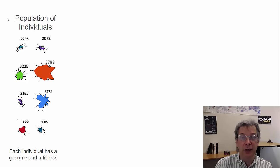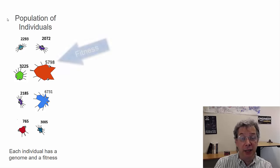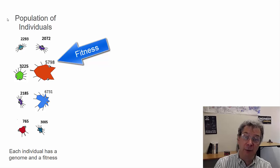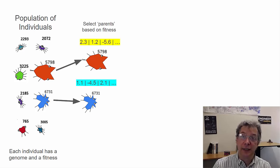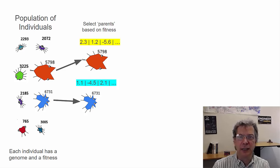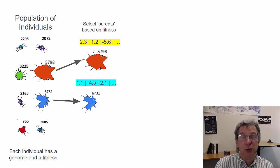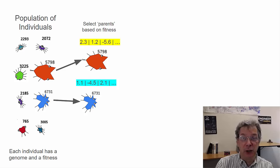Each individual has associated with it its genome or DNA, represented as an array of numbers, and a fitness — a measure of how well that individual solves the problem. Once we have fitnesses, we do selection, choosing parents based on fitness. This is a stochastic process; we don't always want to select the very best individual because then our population will have no diversity and evolution will grind to a halt. So we select, on average, better individuals, but not just the best.